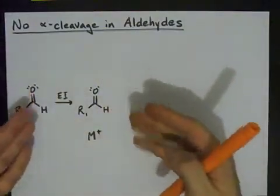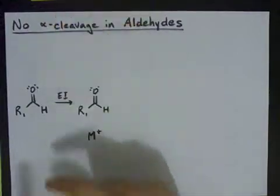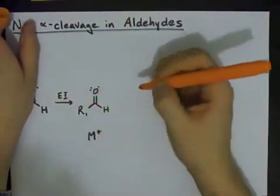Now, what can happen from here? The definition of alpha cleavage is when one of these bonds breaks, leaving you with a positively charged ion and a radical.